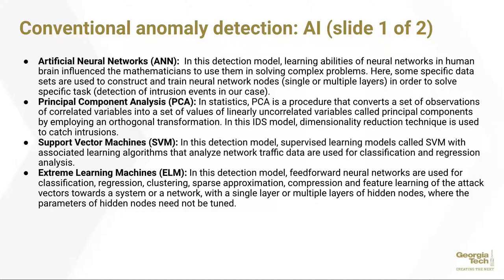Principal component analysis (PCA) is a statistical procedure to convert a set of observations of correlated variables into a set of linearly uncorrelated variables called principal components by deploying an orthogonal transformation, essentially looking for the highest variance. It is a dimensionality reduction technique that gets around human preconceived ideas of what you might find. Support vector machines (SVM) use supervised learning models with learning algorithms that analyze network traffic for classification and regression analysis. Extreme learning machines use feed-forward neural networks for classification, regression, clustering, sparse approximation, compression, and feature learning with single or multiple layers of hidden nodes whose parameters need not be tuned.